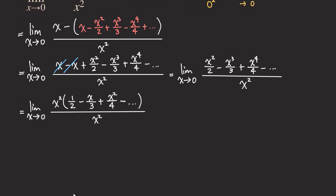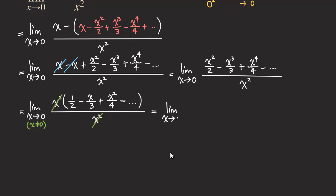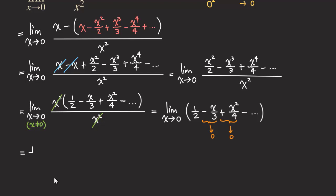Since x is approaching 0 and not equal to 0, we can cancel the x² in the numerator and denominator. We are left with the limit as x approaches 0 of: 1/2 minus x/3 plus x²/4 minus dot dot dot. As x approaches 0, all terms with x go to 0, so we are only left with one half. Our final answer is 1/2.